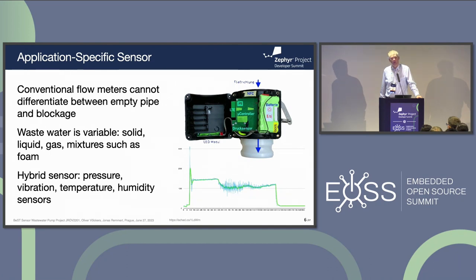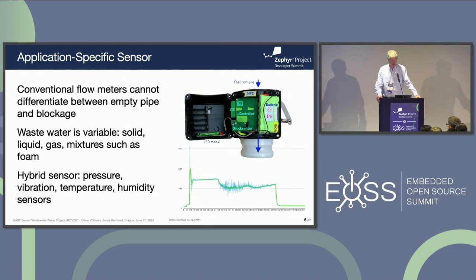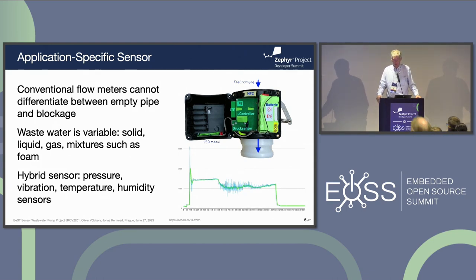First we thought we could use a conventional flow meter, because there are lots of flow meters available in the industry for liquids and they work very well generally. However, in this case with wastewater, they cannot differentiate between an empty pipe and a blockage. An empty pipe is okay, a blockage is not okay, but in both cases there is no flow. Wastewater is something that conventional flow meters cannot easily detect, because it's variable — it's a mix of solid, liquid, and gas, just such as foam. So if you have water with bubbles, is it a liquid or not? From a scientific perspective, it's quite an interesting matter.